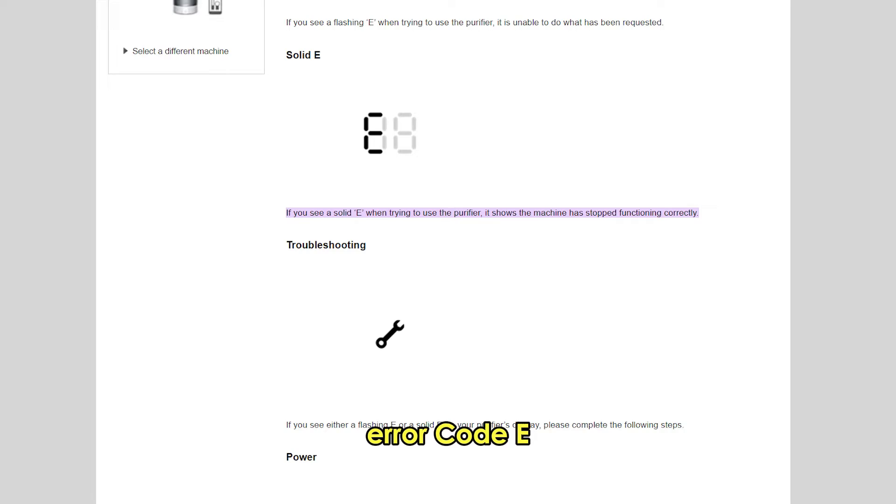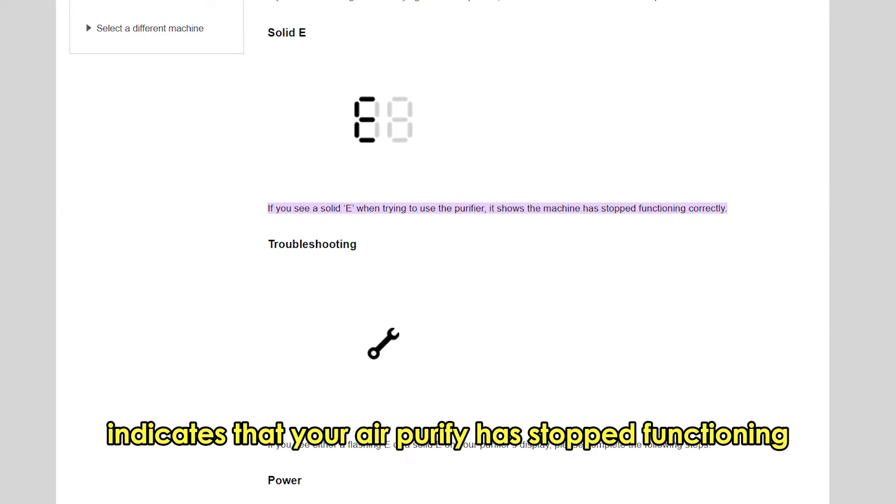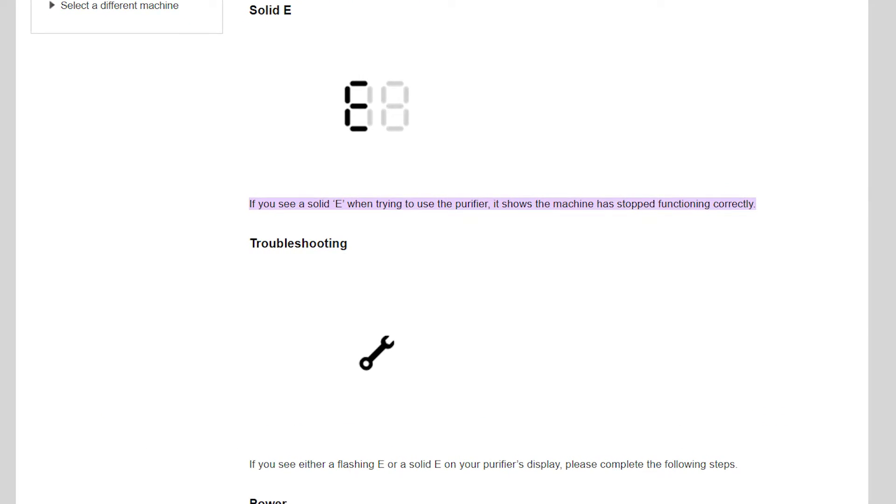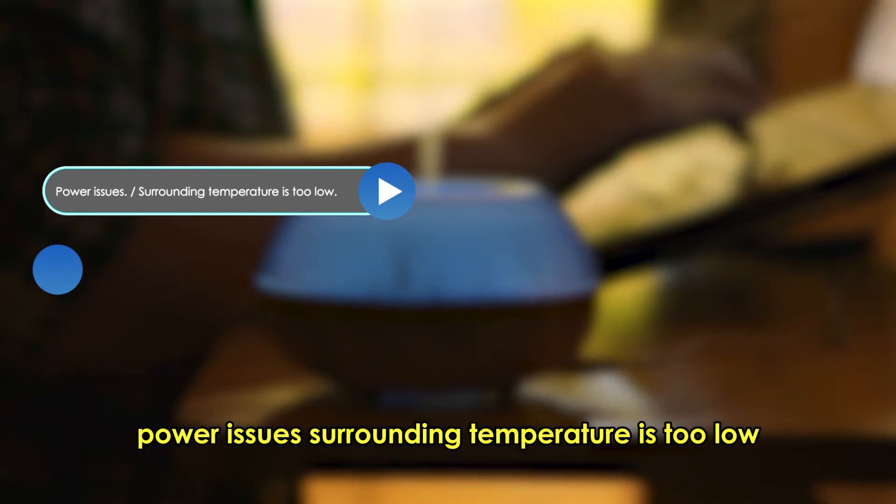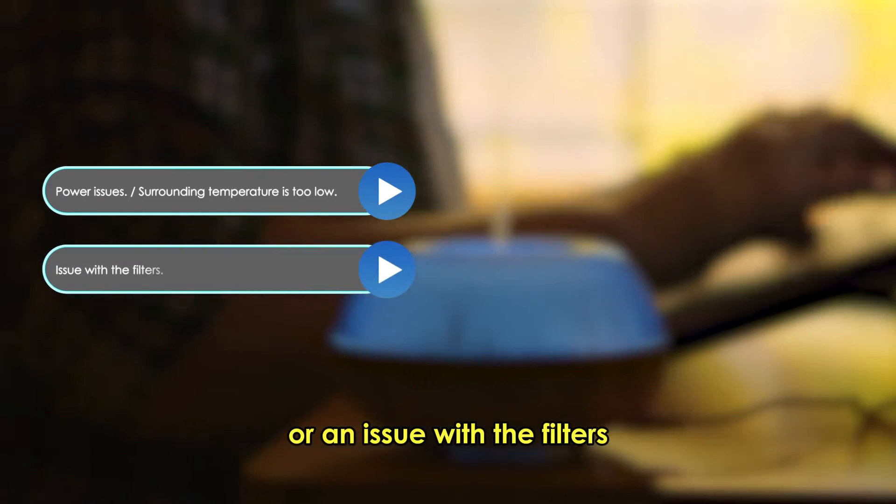Error code E indicates that your air purifier has stopped functioning normally. The following are some of the causes: power issues, surrounding temperature is too low, or an issue with the filters.